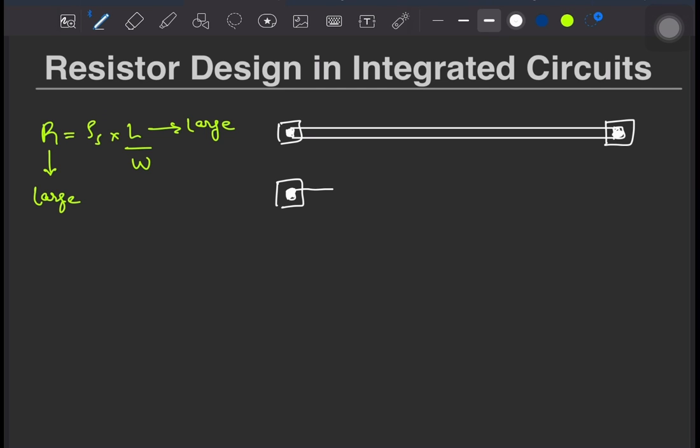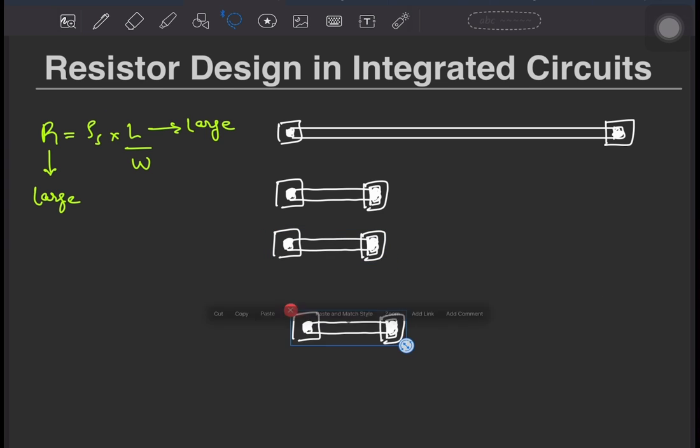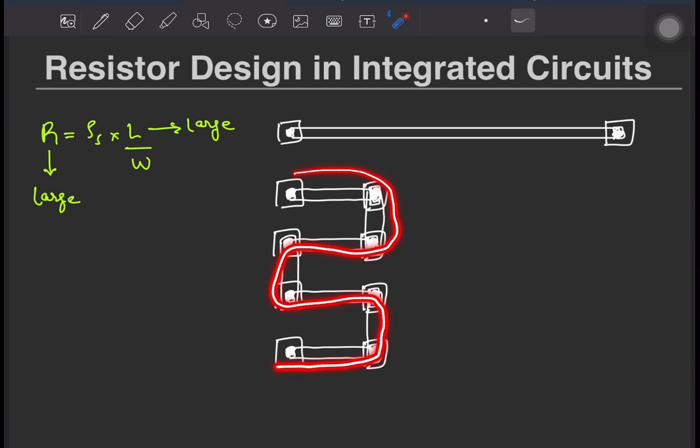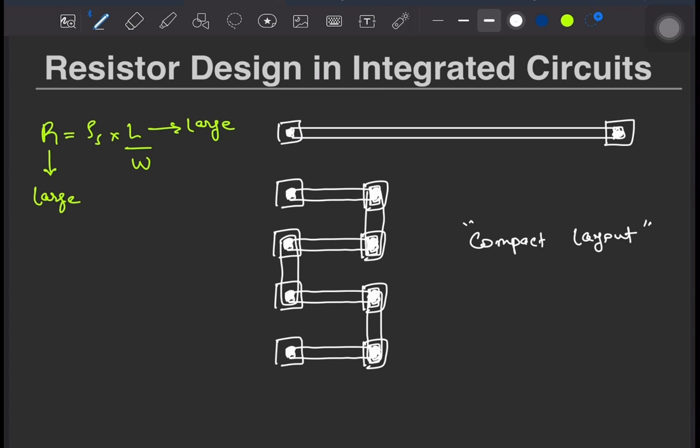But we can of course have a more compact area efficient layout. Resistors are typically laid out in a snake-like fashion, something like this. The length of the resistor is shown in red. Note that there are some DRC rules for the minimum separation between these regions.